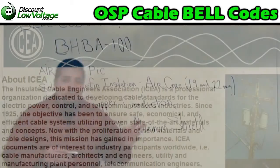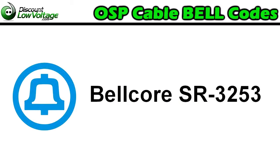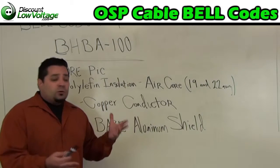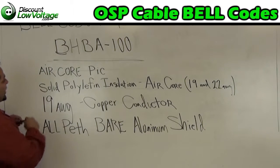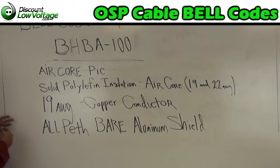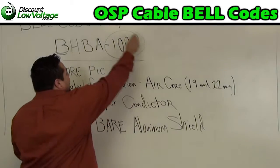All the codes we just went through are based on ICEA Publication P-61-694 and Bellcore SR-3253 Issue 1. According to our code BHBA-100, we have an air core PIC with solid poly insulation air core for 19 and 22 gauge cable. We do have a 19 gauge copper conductor, an all-path bare aluminum shield, and a 100 pair cable.